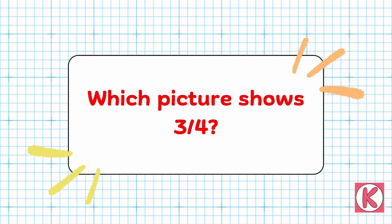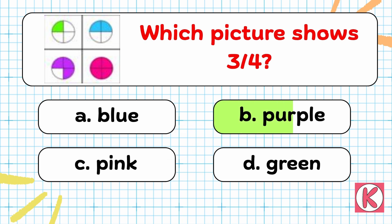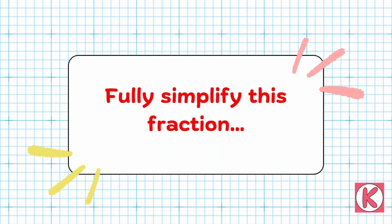Next question. Which picture shows 3 by 4? Correct answer: Option B — Purple.